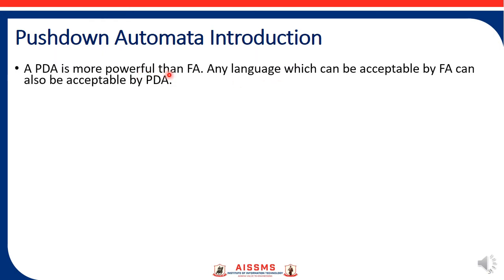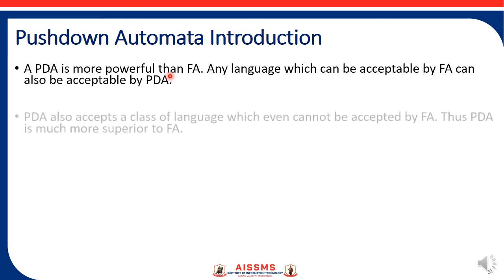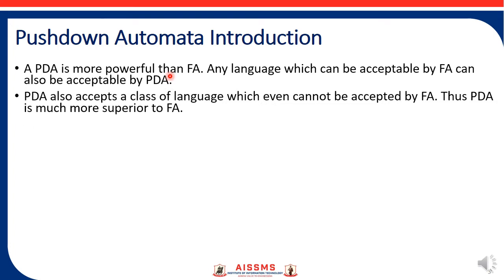Pushdown Automata is more powerful than the Finite Automata that we have studied. Any language which can be accepted by Finite Automata is also recognized by Pushdown Automata. Additionally, Pushdown Automata also recognizes all classes of languages which cannot be accepted by Finite Automata. We have seen that while studying Finite Automata there are certain restrictions on some languages, not recognized due to certain limitations of memory which is not present in Finite Automata.